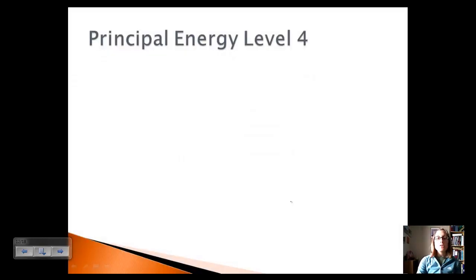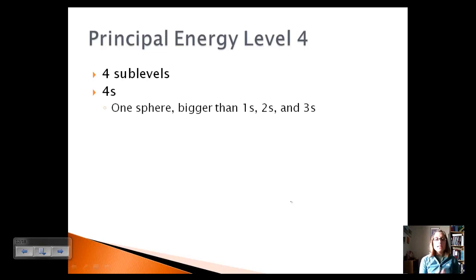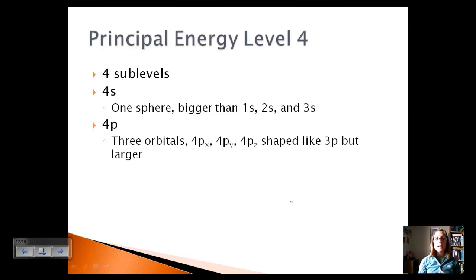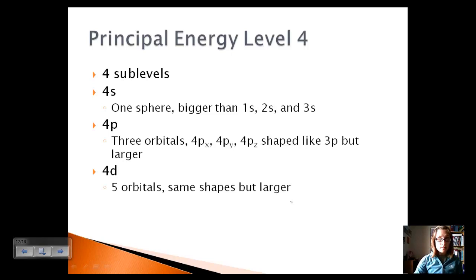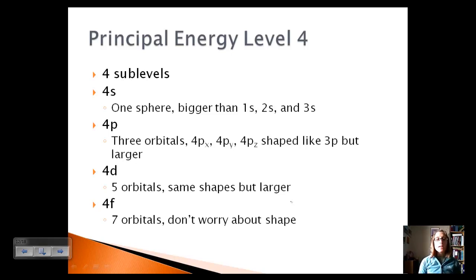Principal energy level 4 has four sublevels. First is 4s — the lowest energy within PEL 4, again a sphere but bigger than 1s, 2s, and 3s. All s sublevels contain only one orbital, the sphere shape. Then 4p, just like 2p and 3p, has three orbitals but shaped larger. Then 4d has five orbitals, same shapes as 3d but larger. The new one is 4f, which has seven orbitals. So: s has one orbital, p has three, d has five, and f has seven. We will relate this to the periodic table when we discuss electron configuration.